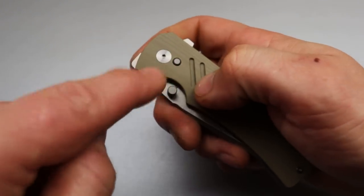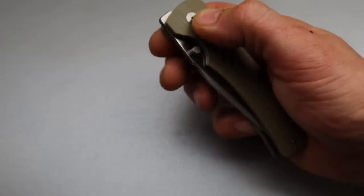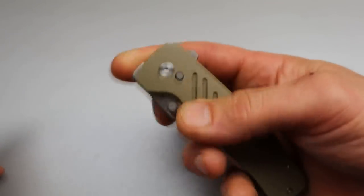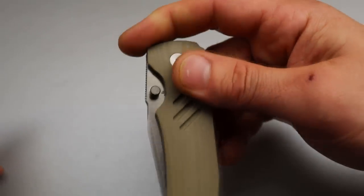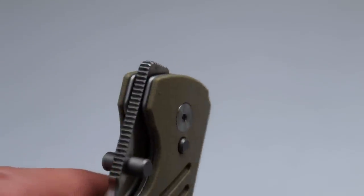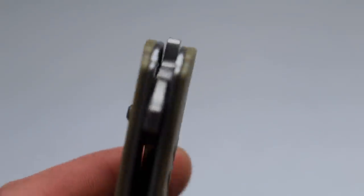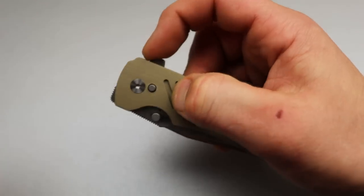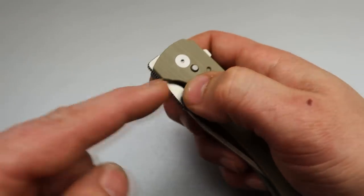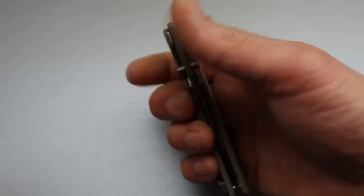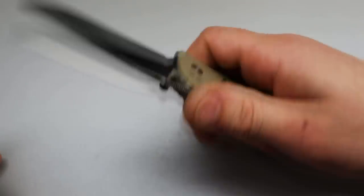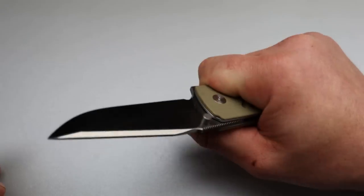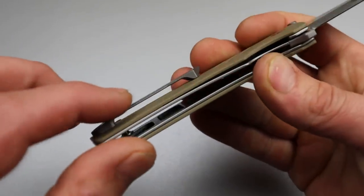And they tuned the detent so good on this. I think we need to see more locks like this because it makes it to where, at least on this example, or at least on the examples I have, the detent is perfect for all deployments, which in many cases is not easy for companies to do because while one, like say a flipper tab, you might need a little bit stronger detent than you would on a front flipper or thumb studs. But in this case, they knocked it out of the park.